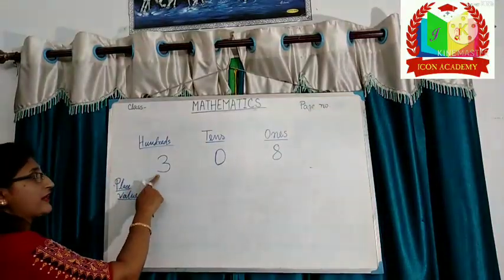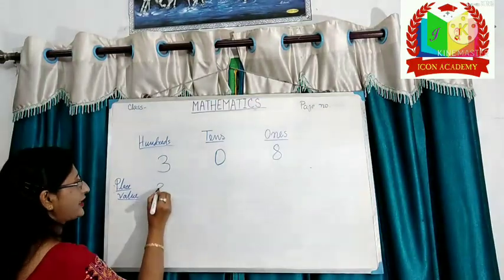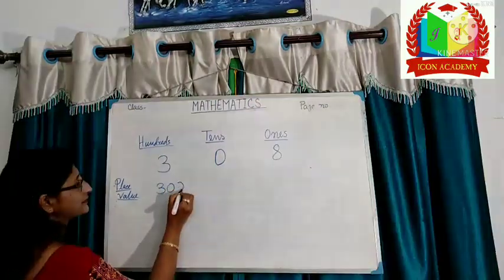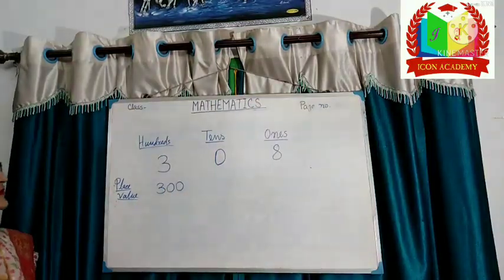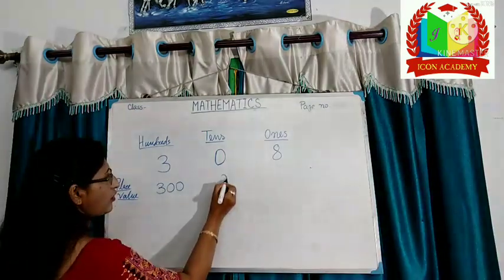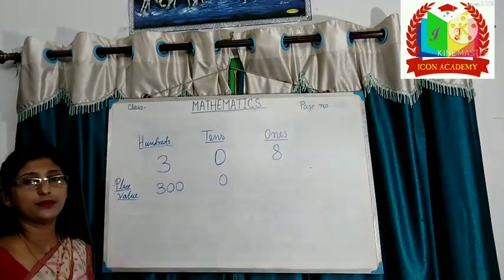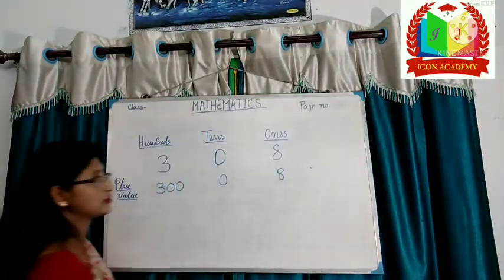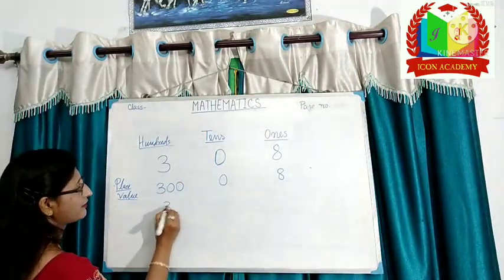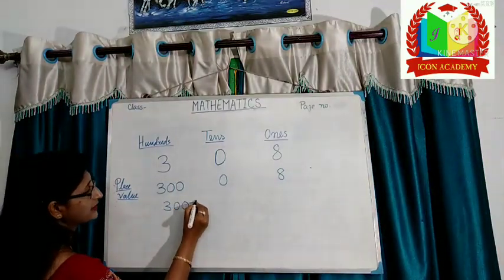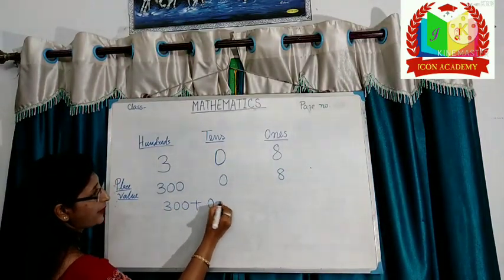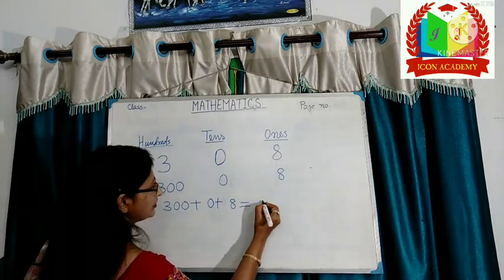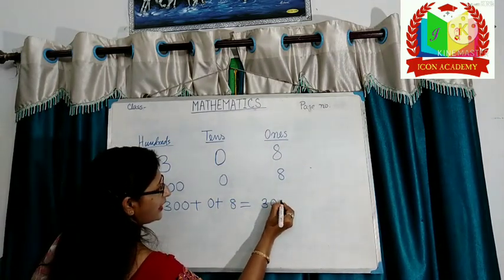Here, place value of three is three hundred. Place value of zero is zero. Place value of eight is eight. So, three hundred plus zero plus eight equal to three hundred eight.